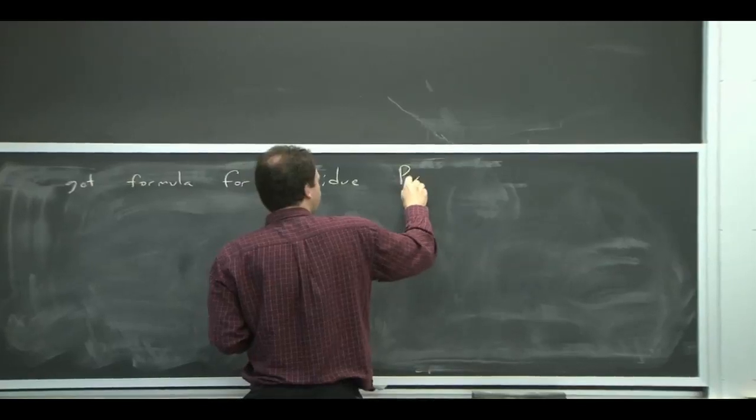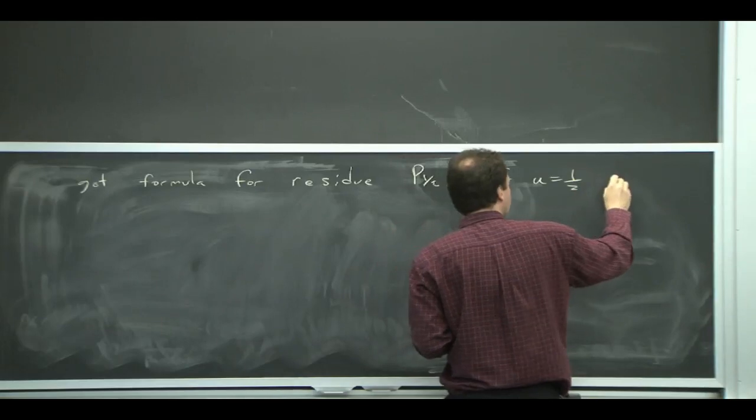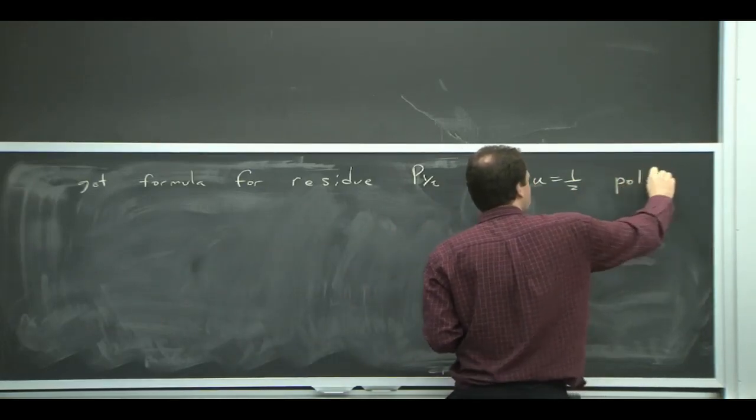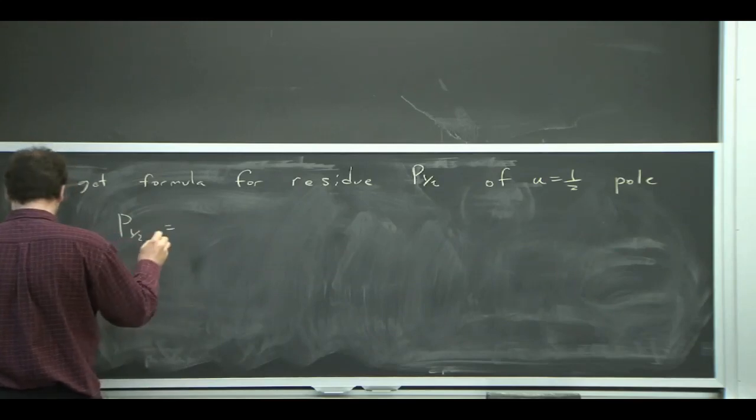And what you find is a formula for the residue of the Borel pole. So let me call that residue P 1 half.